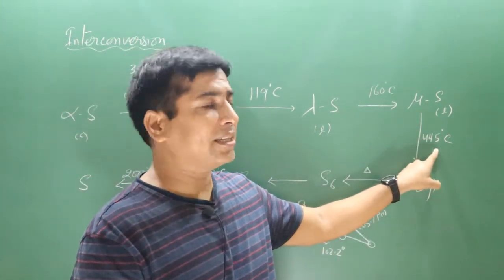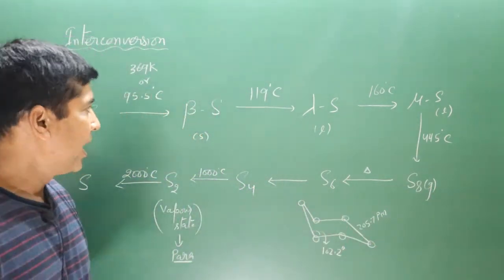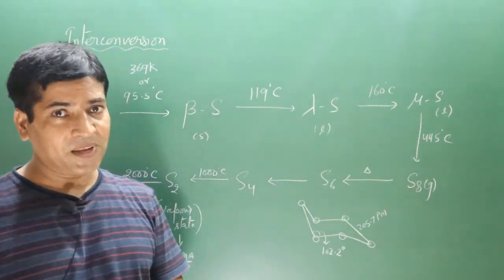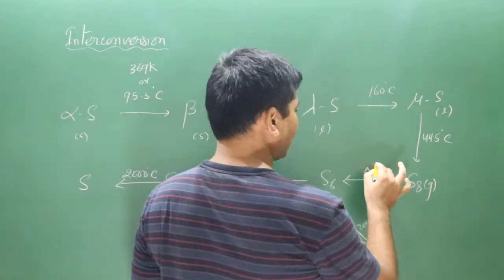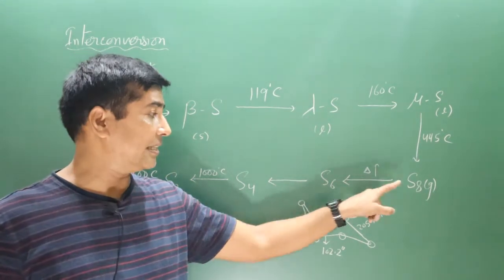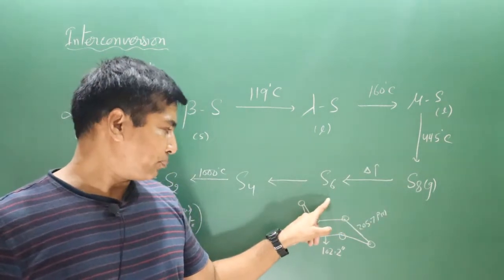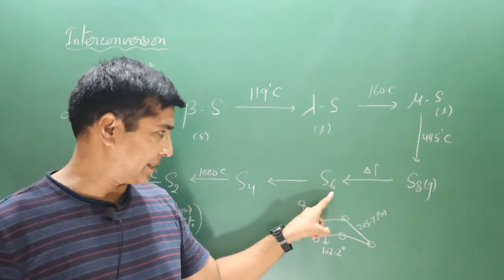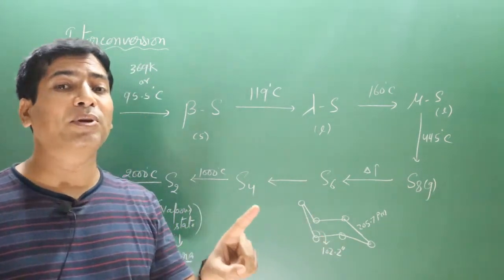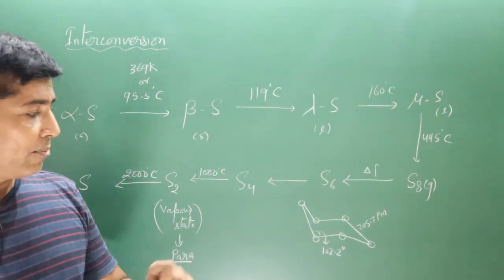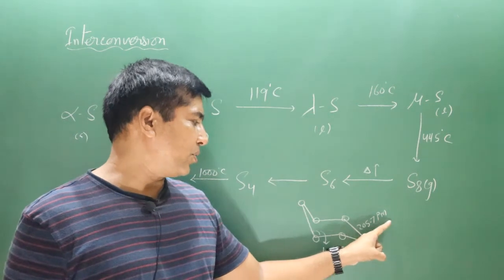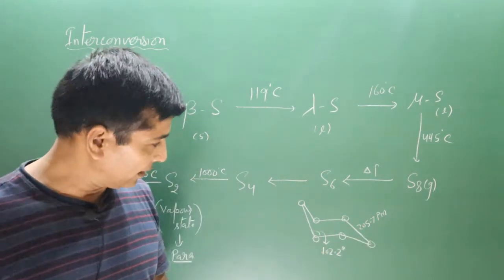Mu sulfur is quite thick and viscous. When it is heated at 445 degrees Celsius, it converts into gaseous state — solid converts to liquid and liquid converts to gaseous state as we keep increasing the temperature. On further increasing the temperature, this large S8 molecule splits into smaller molecules, giving hexasulfur S6. S6 is present in the chair form, which is more stable than the boat form because repulsion is less. The bond length in S6 is 205.7 picometers and the bond angle is 102.2 degrees.